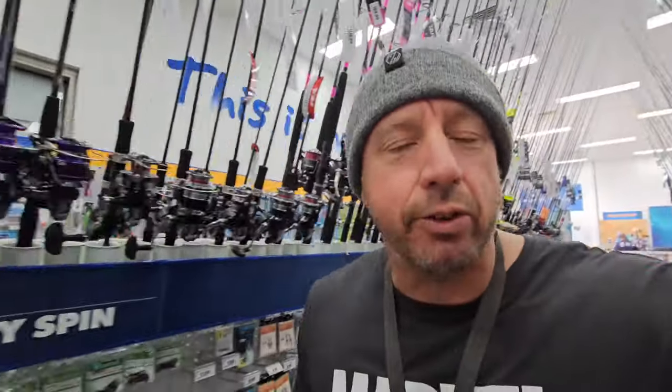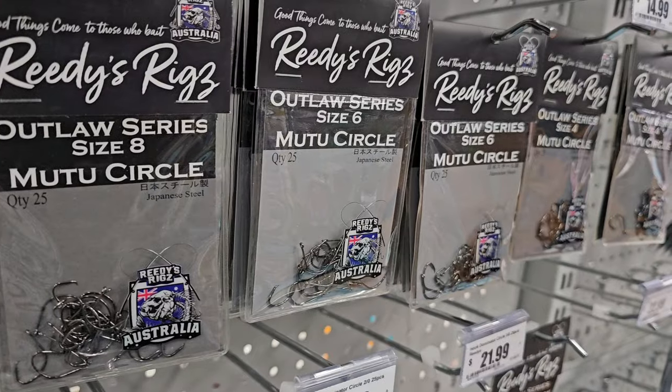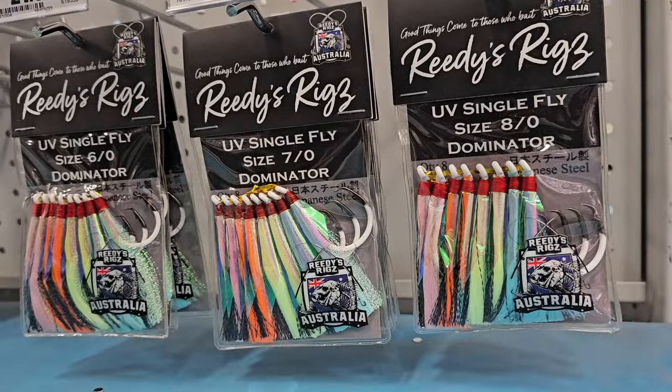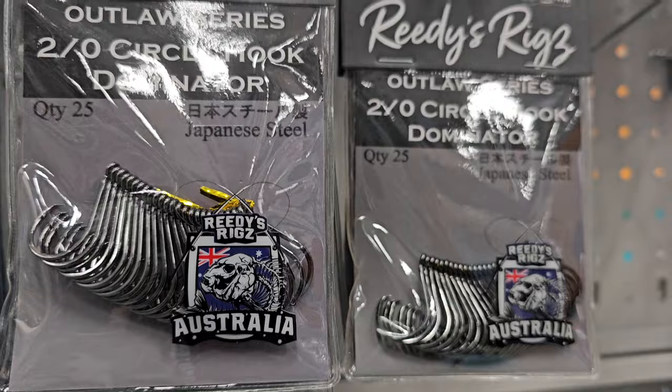I'm just down here at BCF, just grabbing a couple of hooks, because I'm planning on making my own snapper rigs. But first, I just needed some hooks. And what better than the Reedy's rigs? Reedy's rigs 3 and 5. Apparently they're doing the damage at the moment.